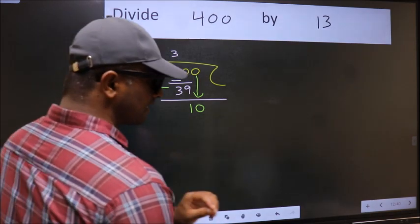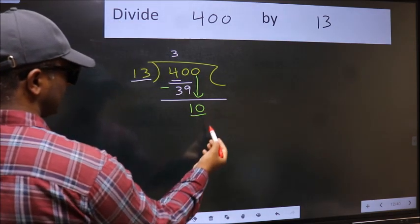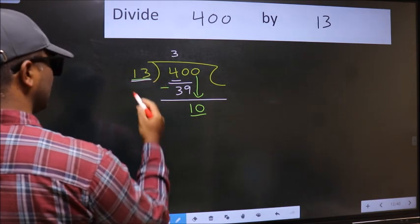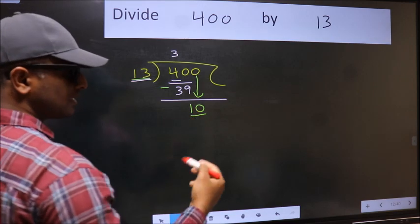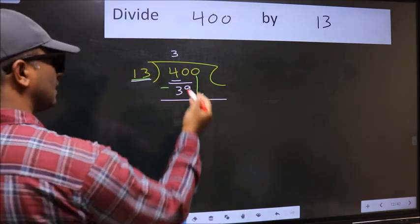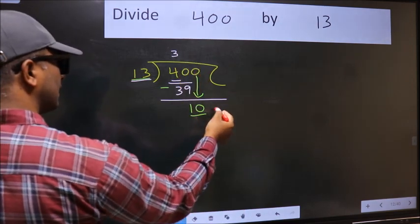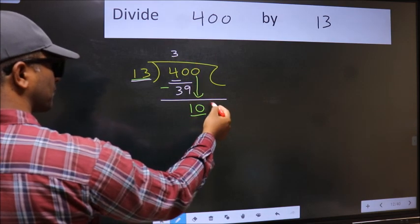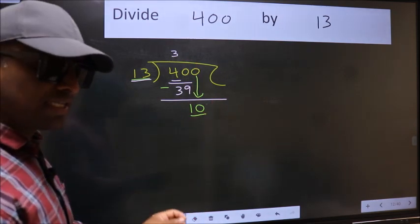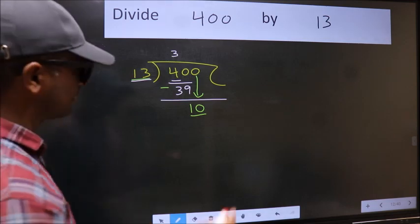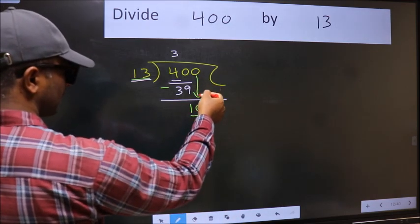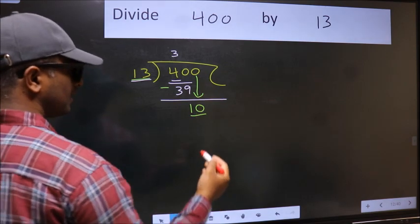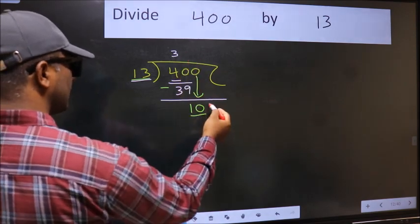And the mistake is this: here we have 10 and here 13. 10 is smaller than 13, so what many do is they directly put dot and take 0, which is wrong. Why is it wrong? Because just now you brought this number down and in the same step you want to put dot and take 0, which is wrong.